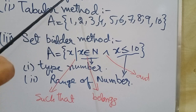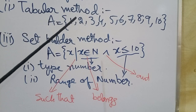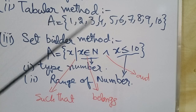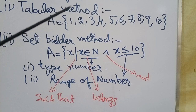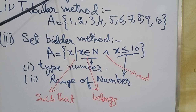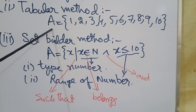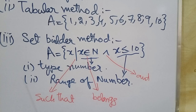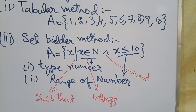For example, if we want to write the set of names of days in a week, we can use tabular or descriptive method. But if you want to write a set of thousands, billions, trillions, or names of people in a city, we use the set builder method.